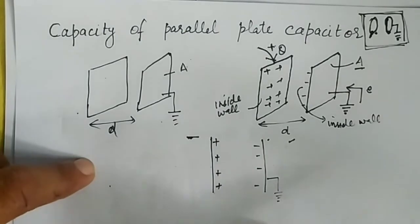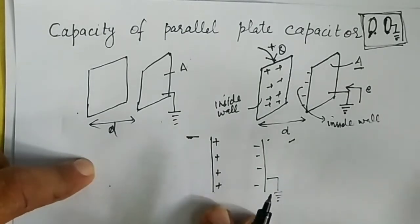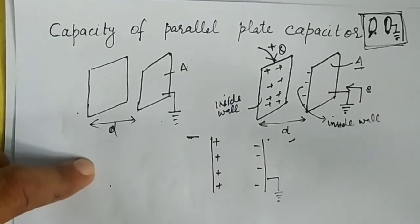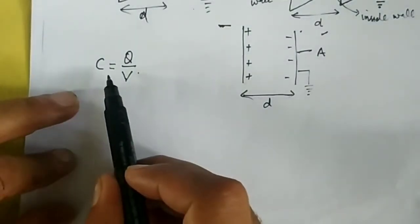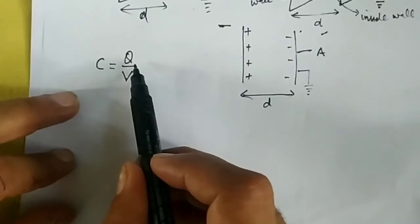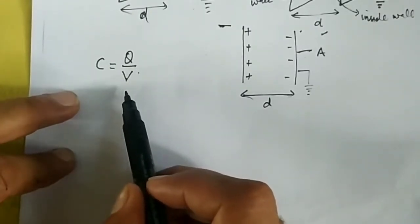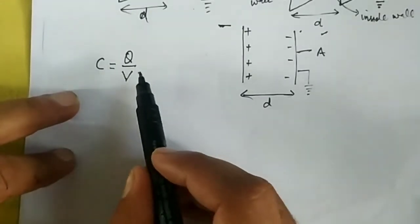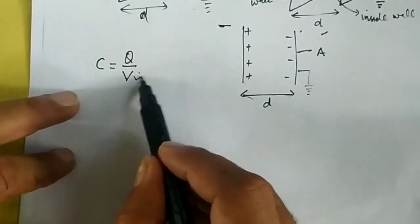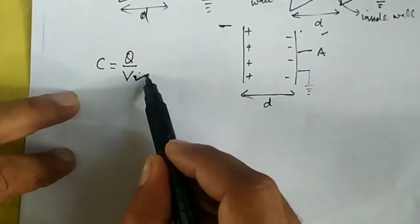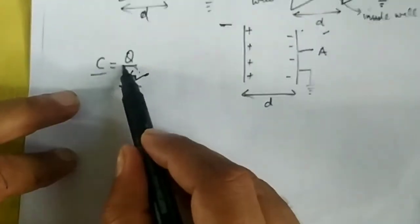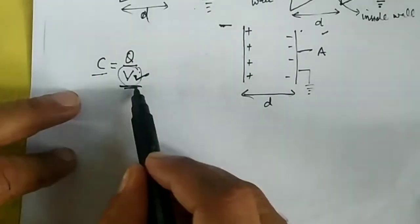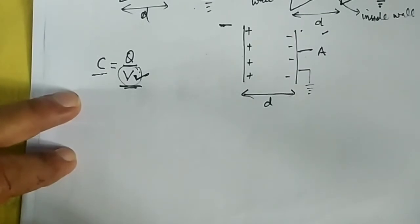Now I want to find the capacitance of this parallel plate capacitor. According to the definition, capacitance is defined as how much charge is collected per unit potential developed. So if we can calculate the potential developed, we can find the capacitance. Therefore we first calculate V, the electric potential, and from that we get the value of C.